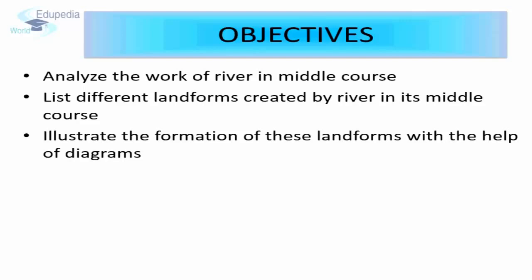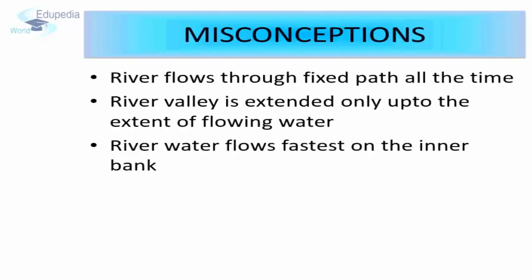Before we begin our exploration about the middle course of river, let us look at some of the common misconceptions that exist regarding the same. First, river flows through a fixed path all the time. Second, river valley is extended only up to the extent of flowing water. Third, river water flows faster on the inner bank of a meander. Well, all these are myths and misconceptions.